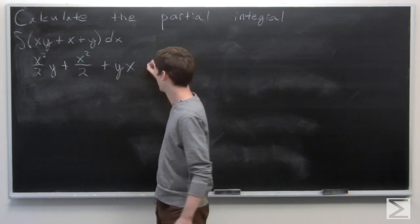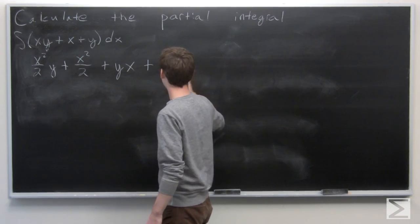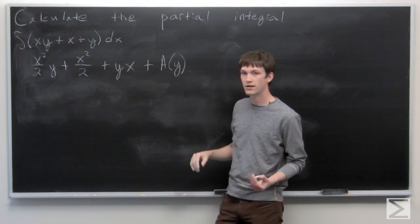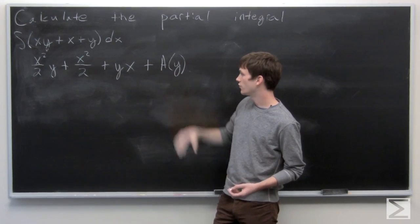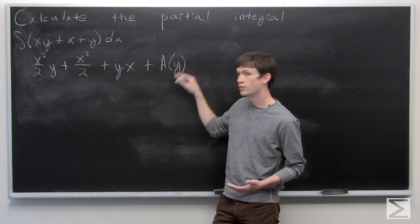And then we need some arbitrary function in terms of just y. Since our y is constant, when we take the partial derivative with respect to x, this term will disappear.